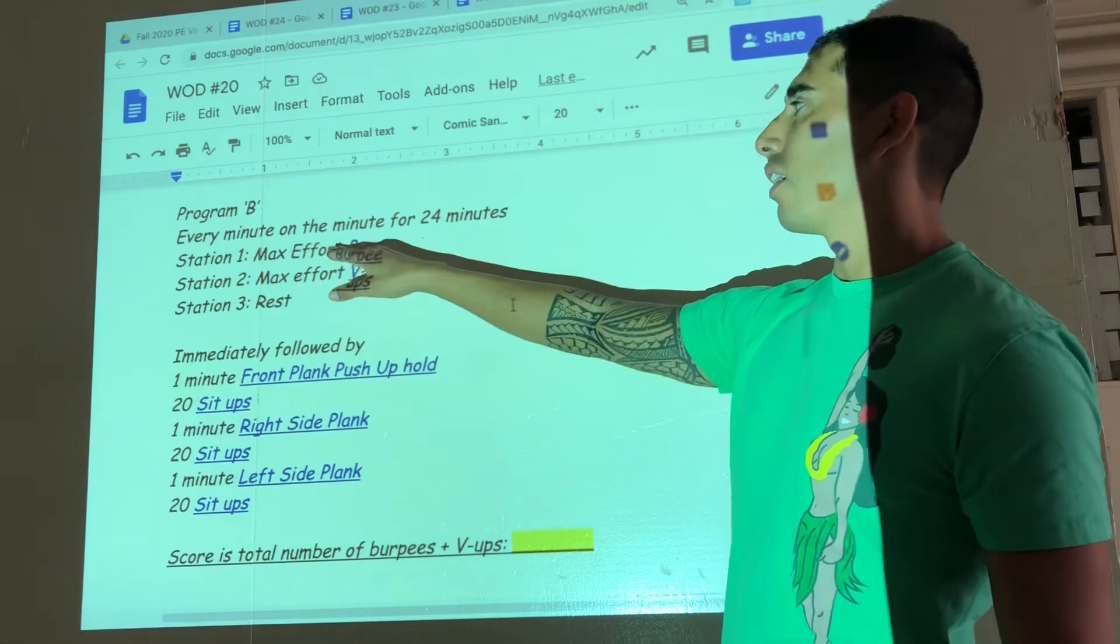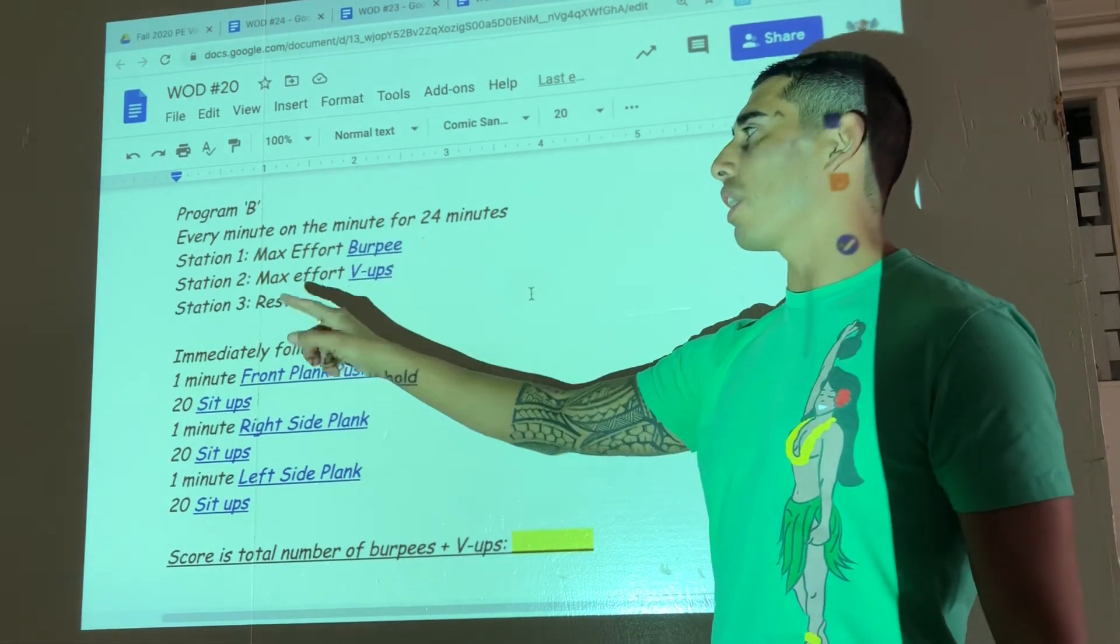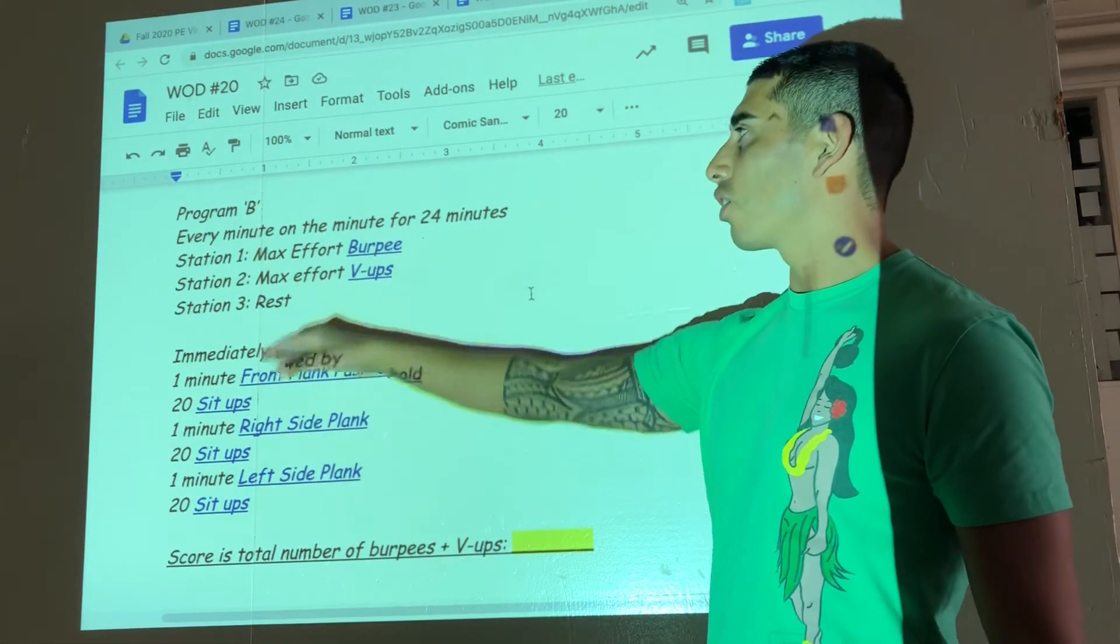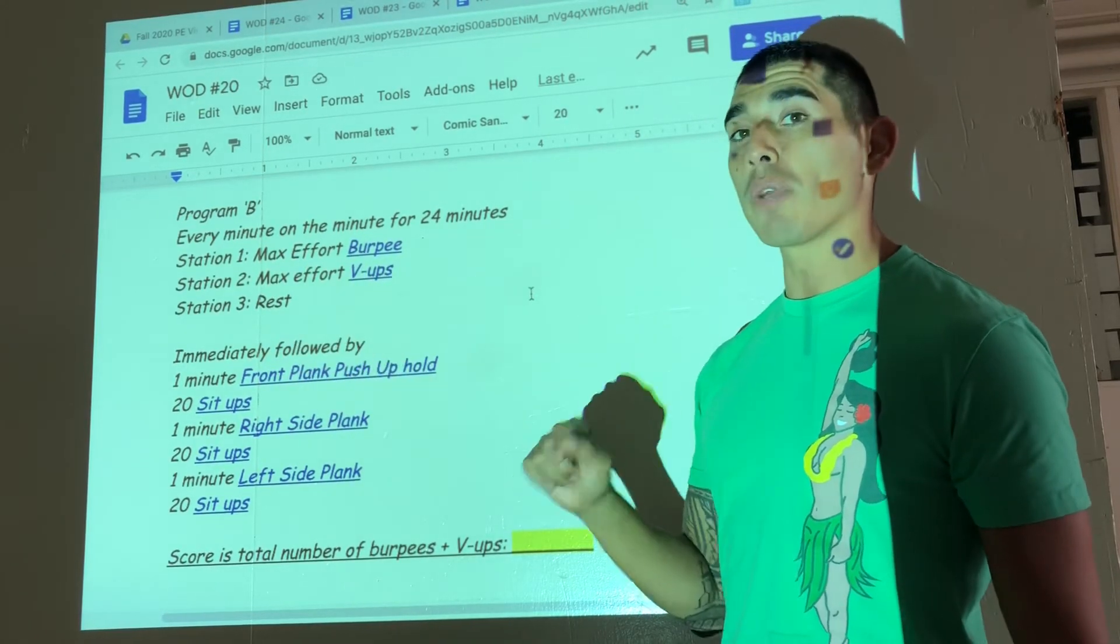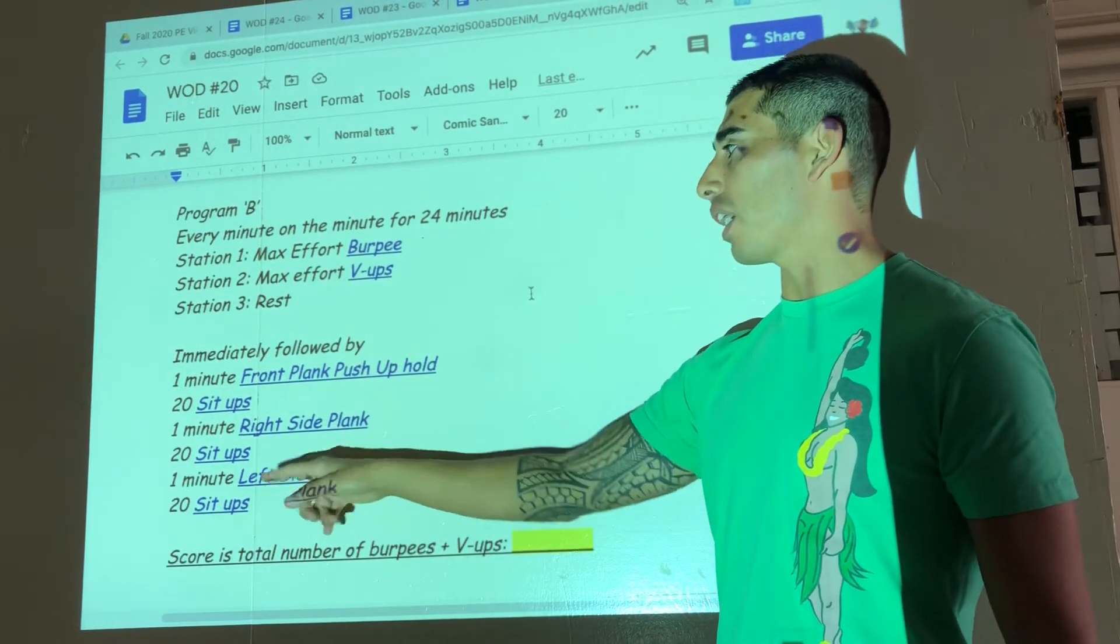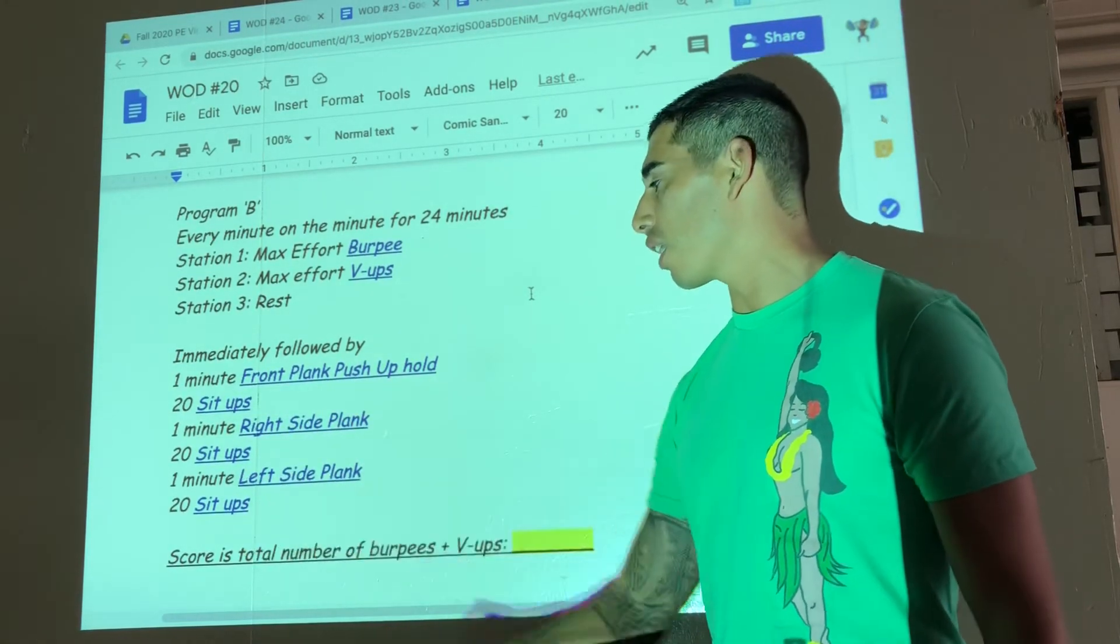So once again, you'll have a minute of work, a minute of work, rest. You'll go for that for 24 minutes. At 24 minutes and one second, you start your plank, sit-up, plank, sit-up, plank, sit-up.